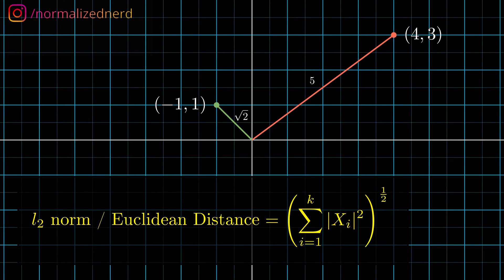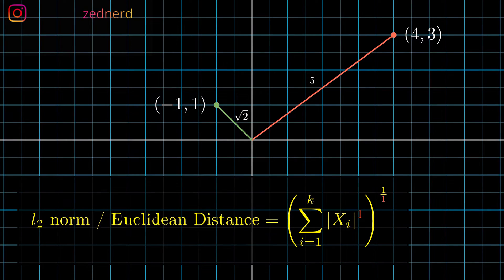But is there any other way to measure the size of the vector? Yeah, there are. To be precise, an infinite number of them. The trick is to change the number 2 in the formula. Let's change this to 1. Well, this time we are effectively adding all the components of the vector. And this is called the Manhattan distance, aka L1 norm.